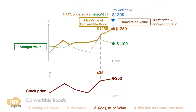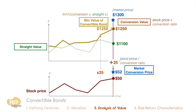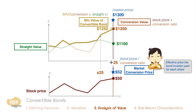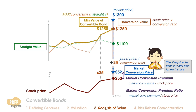Let's say the market price of the convertible bond is $1,300. If the investor buys the convertible bond at this point, we can calculate the effective price per share the investor paid by dividing the bond price by the conversion ratio. This is known as the market conversion price, or conversion parity price, which works out to $52. The investor effectively paid $52 for each share. From this price, we can calculate the market conversion premium per share, which is the difference between the market conversion price and the market price of the shares. The market conversion premium ratio can also be calculated. For our example, the premium per share is $2, and the premium ratio is 4%.